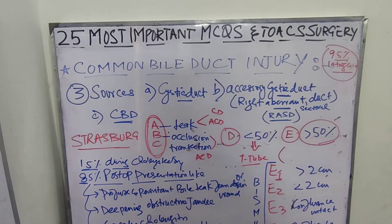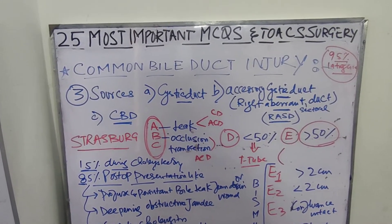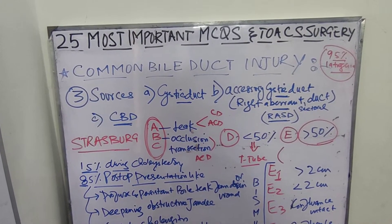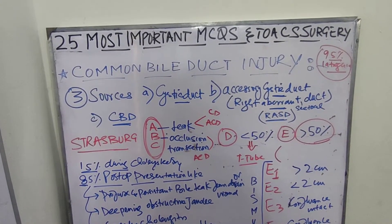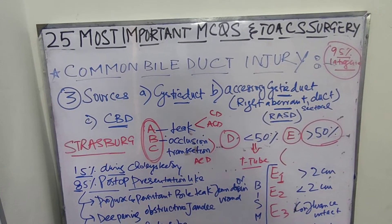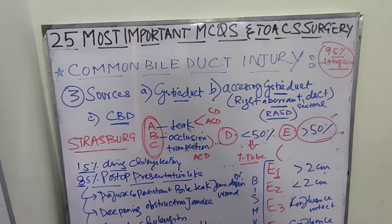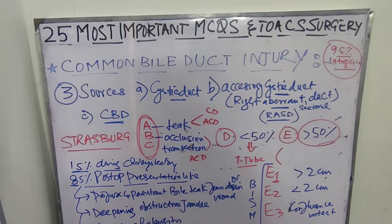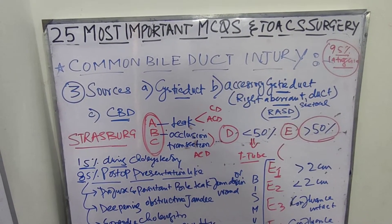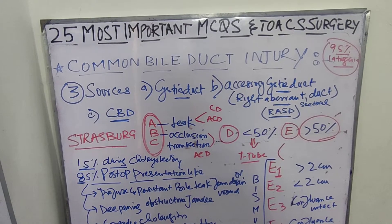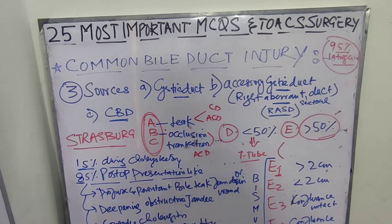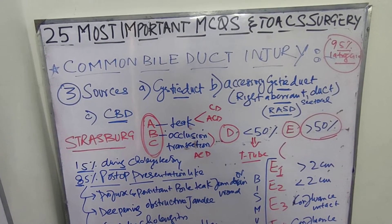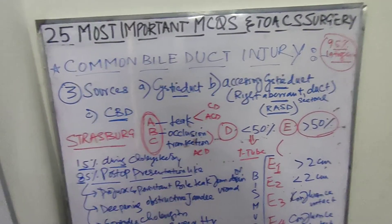The first source is cystic duct leak, the second is accessory cystic duct injury, and the third is common bile duct injury. There are two classification systems to understand these injuries: the first is the Strasberg classification and the other is the Bismuth classification.